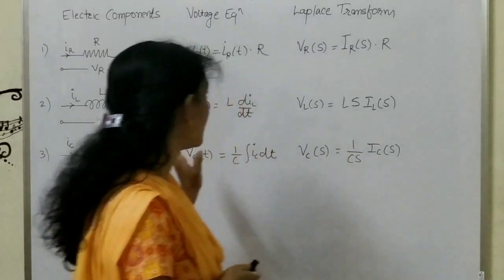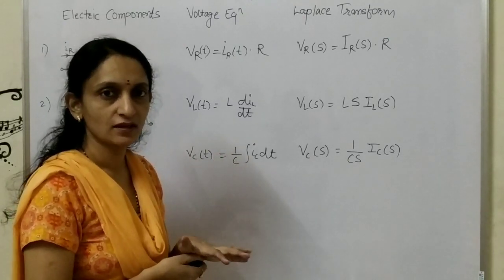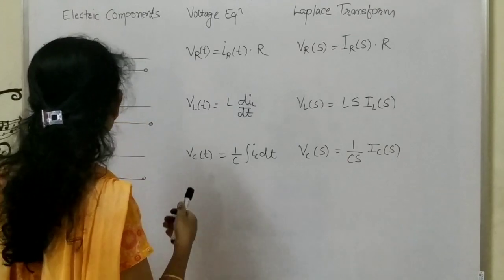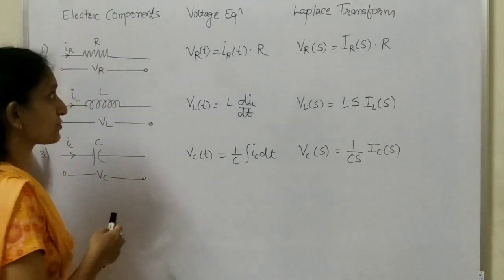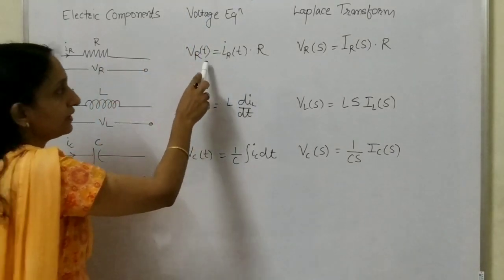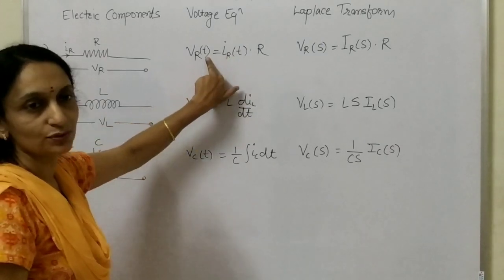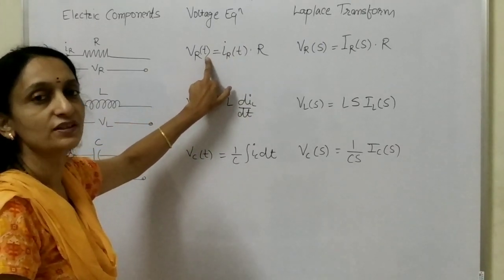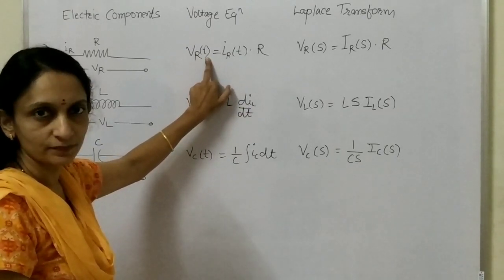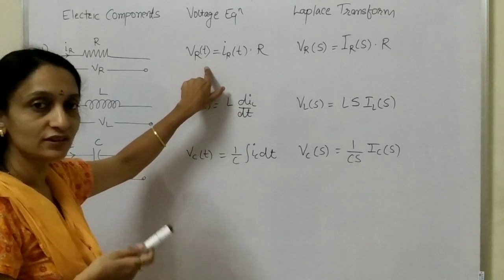Here I have written only the voltage equation because first we will solve numericals based on the series circuit, then later on we will discuss about the parallel circuit. This is only revision — you know about this voltage and current equation from first year. The voltage equation for the resistor is VR equals IR, where voltage and current are varying with respect to time.